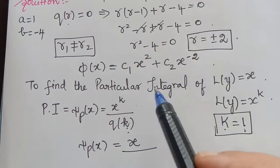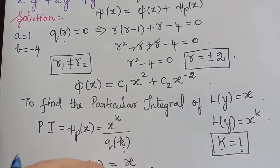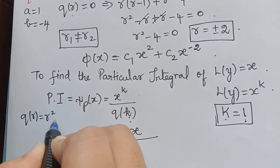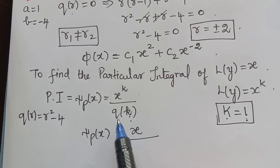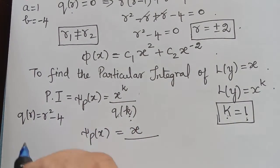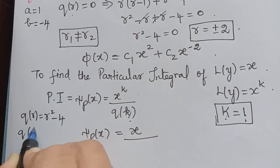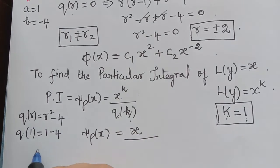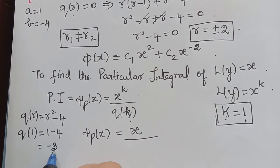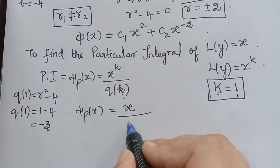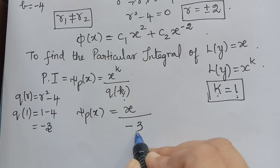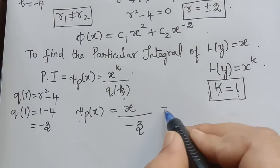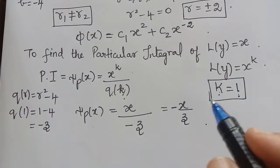Now q(r) = r squared minus 4. We find q(1) by substituting r = 1: q(1) = 1 squared minus 4 = 1 minus 4 = negative 3. Substituting, we get ξₚ(x) = x divided by negative 3, so ξₚ(x) = negative x over 3.